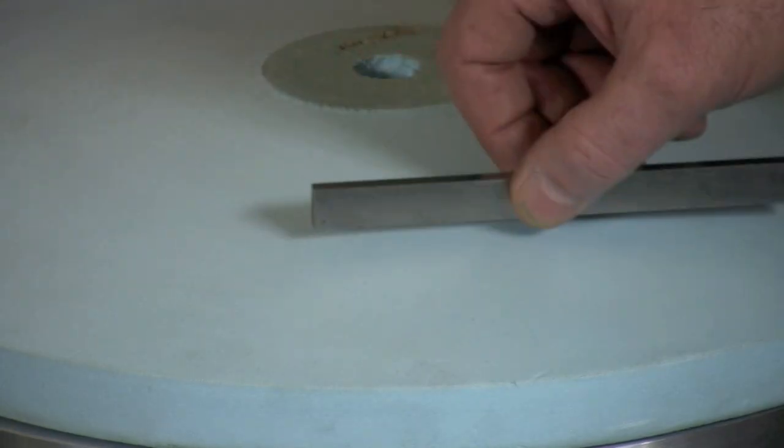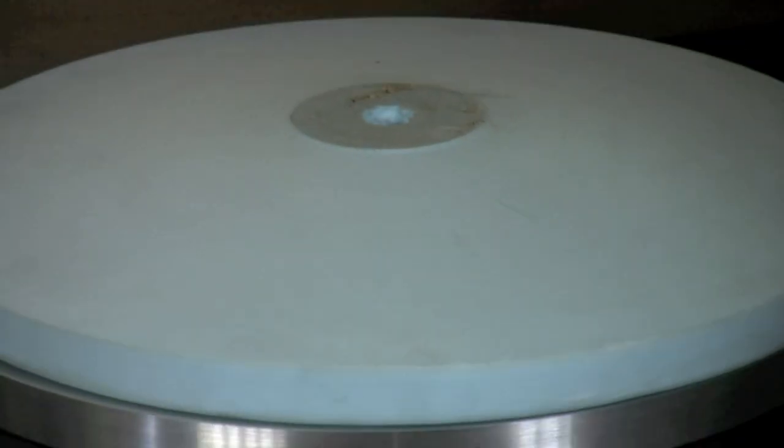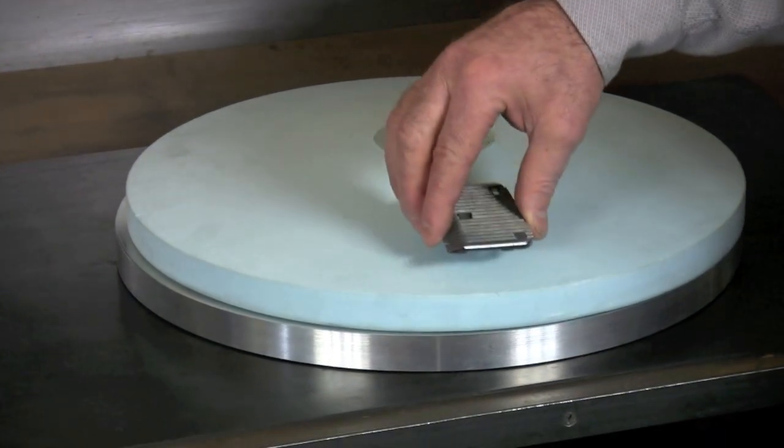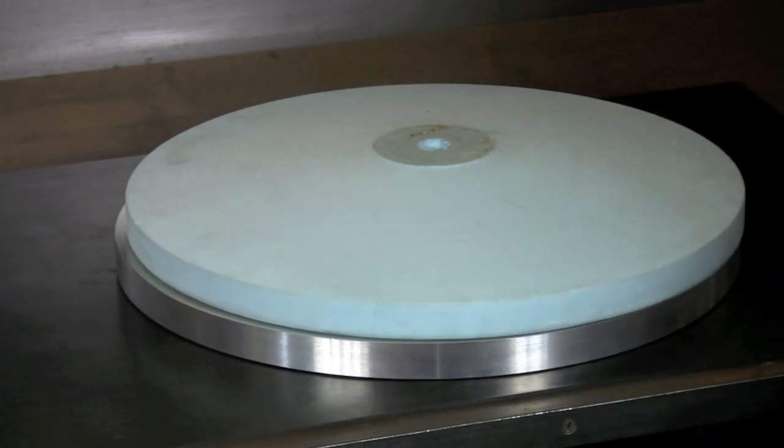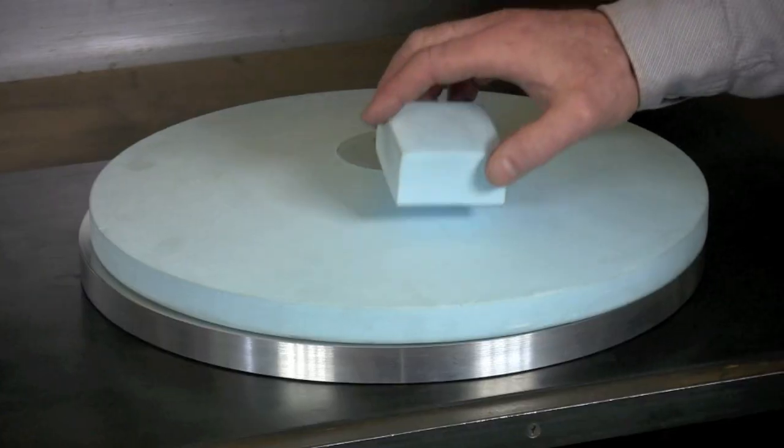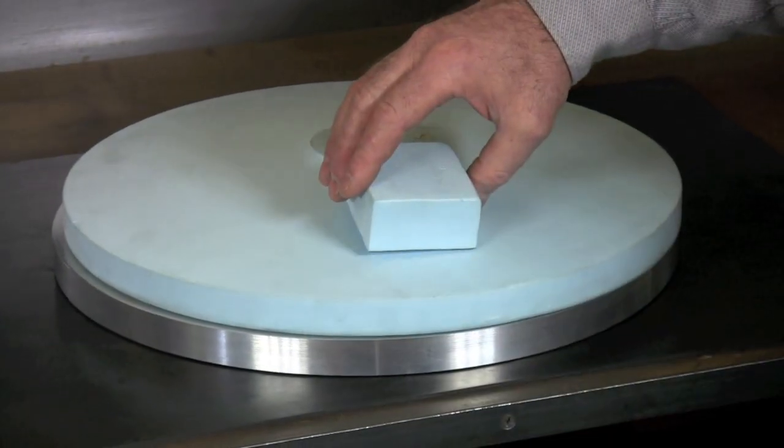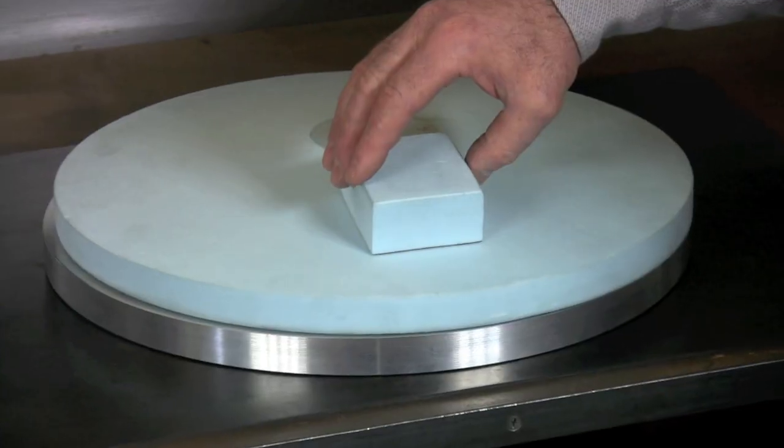And when grit is applied and a blade is sharpened on the disc, it will grind a hollow or a concave grind into the blade.